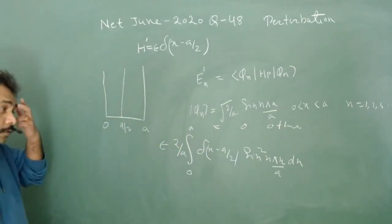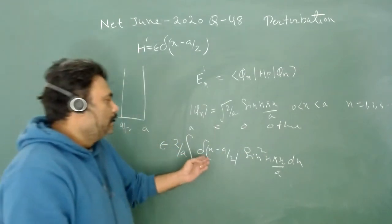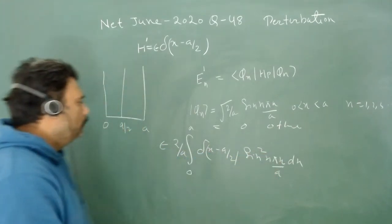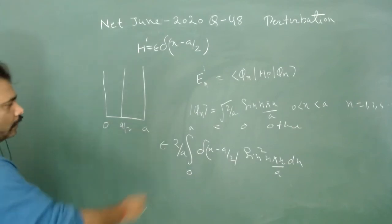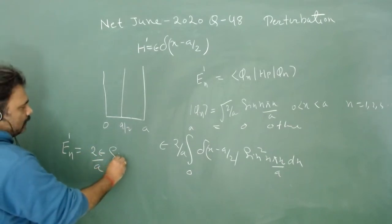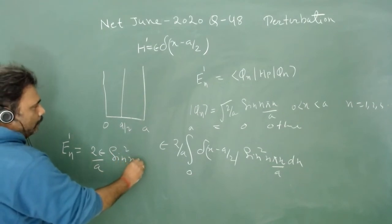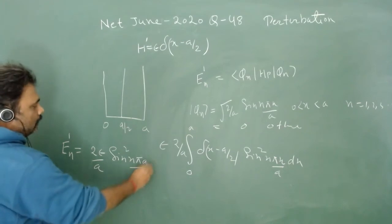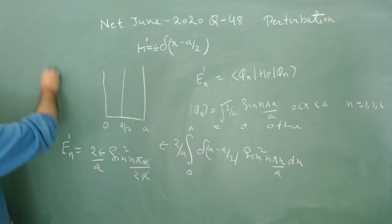This Dirac delta is at x equals a/2, so we have to put the value x equals a/2. So we have En1 as 2*epsilon/a, and we have sin^2(n*pi*a/(2*a)). This a and this a will cancel.